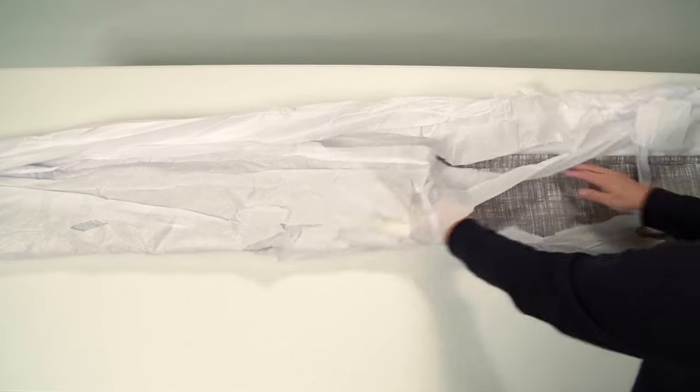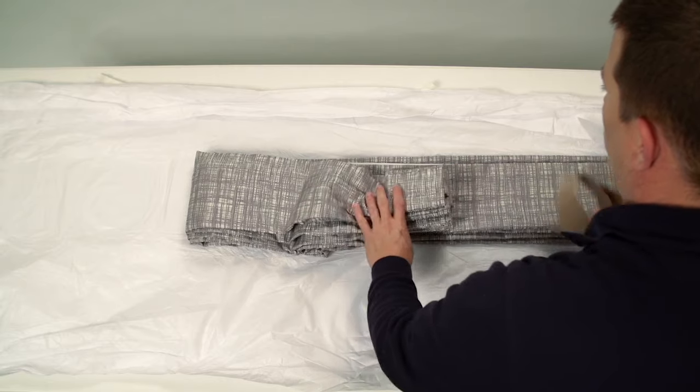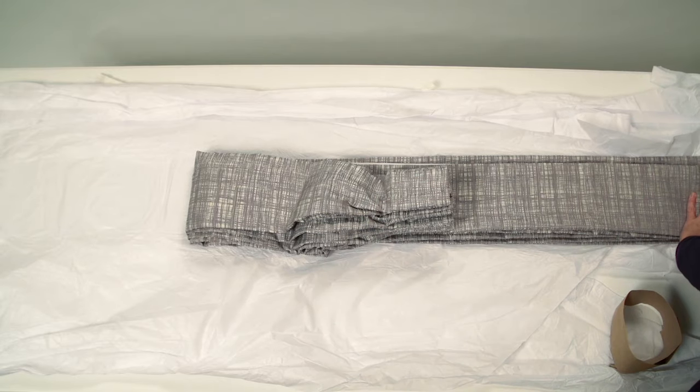Lay your drapery on a flat surface. Remove the tissue and top paper bands only, leaving the bottom of the draperies banded. This will make the hanging of the draperies easier.